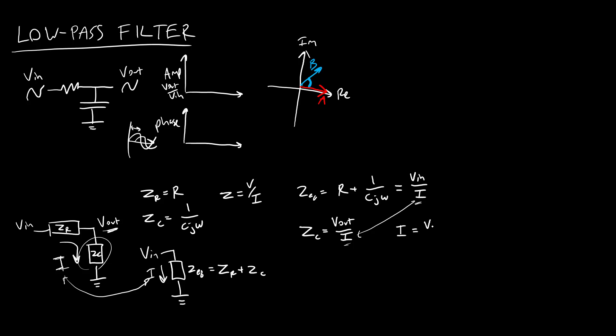But I know that these I's are the same. So I'm going to rearrange these equations to solve for I. So here I have I equals Vout over Zc. And here I have I equals Vin over R plus 1 over Cj omega. And I can now set those equal to each other, because again, I know these I's are equal, so I have Vin over R plus 1 over Cj omega equals Vout over Zc.